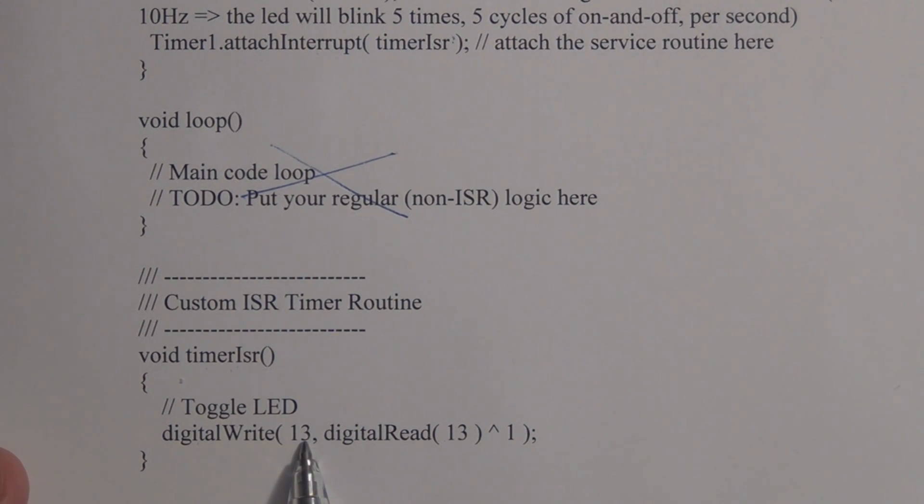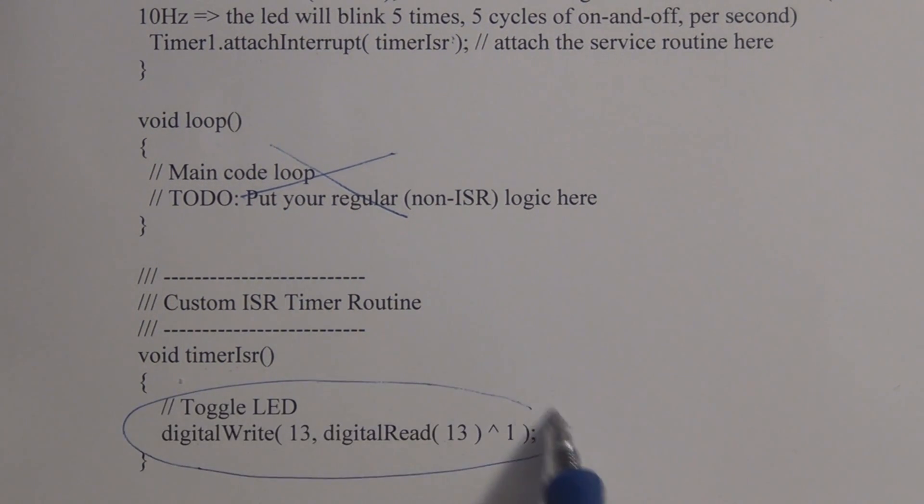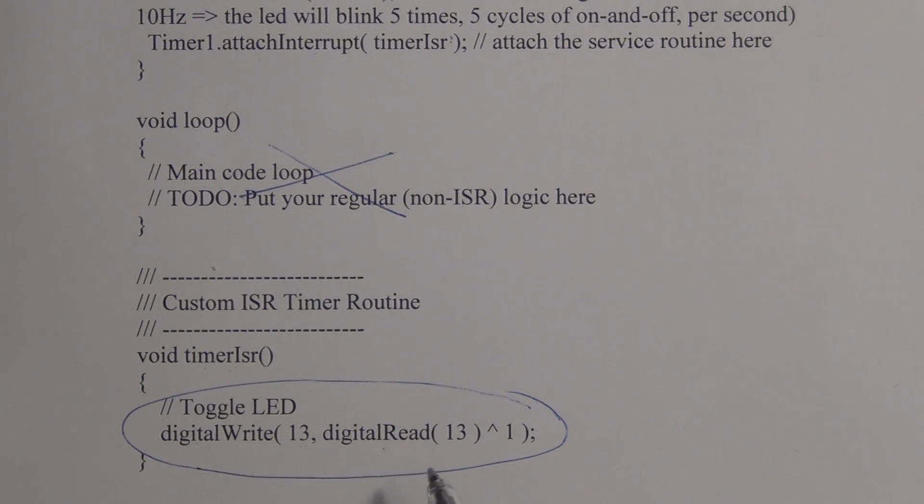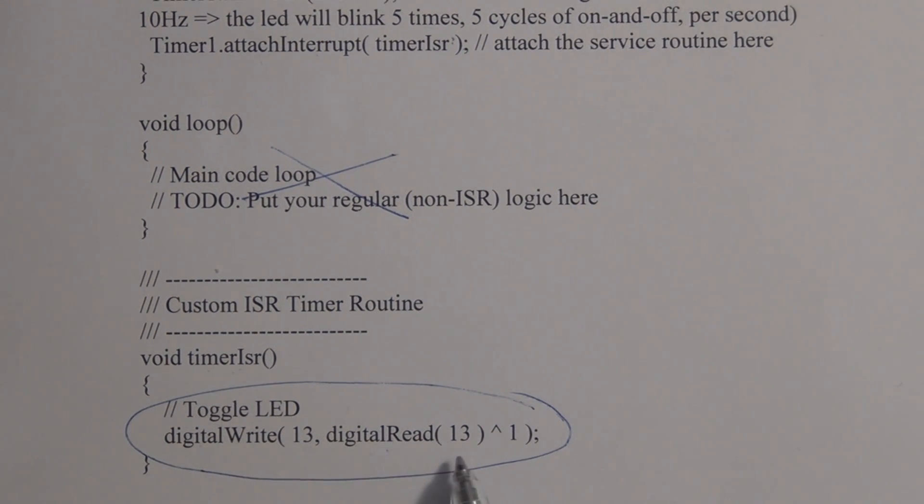This is an interesting way to toggle that LED. If you see here, we've already declared pin 13 as an output, so how can we do a digital read? Well, on the Arduino, on the microcontroller, there are registers that monitor the pins, the I/O pins on the microcontroller. When you do a digital read on 13, it looks to see whether that pin is high or low. This is a bitwise operator, it's actually an XOR operator.